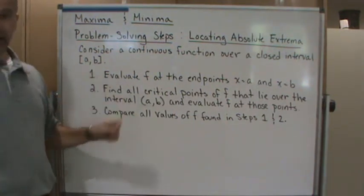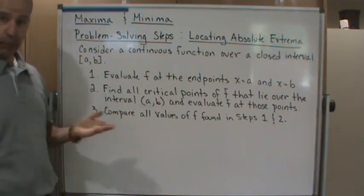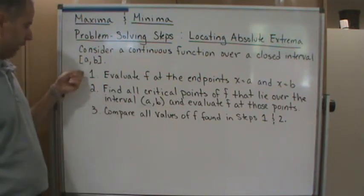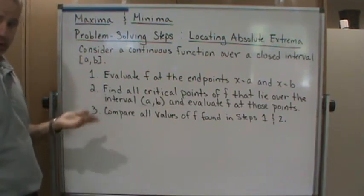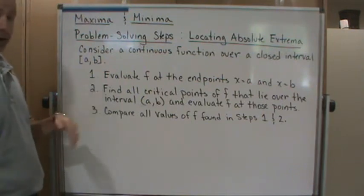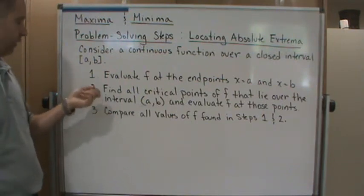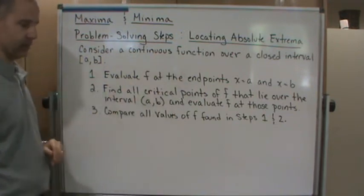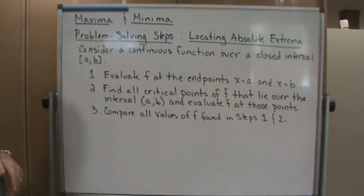One, evaluate the function at the endpoints. First thing you do. Now, again, you can do steps one and two in different order, but step one, always check the endpoints. Okay, so easy, just evaluate f at the endpoints, x=a and x=b.